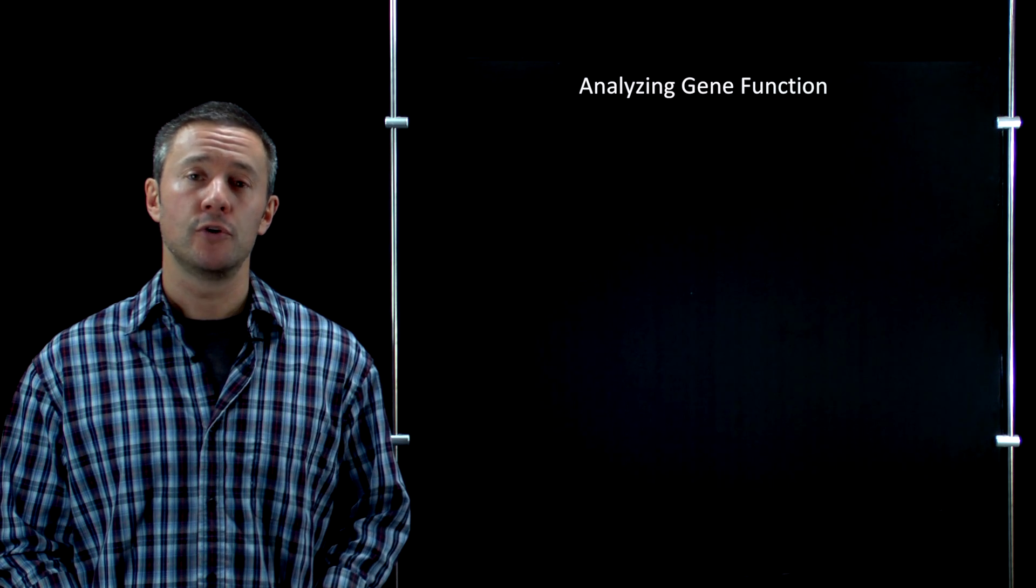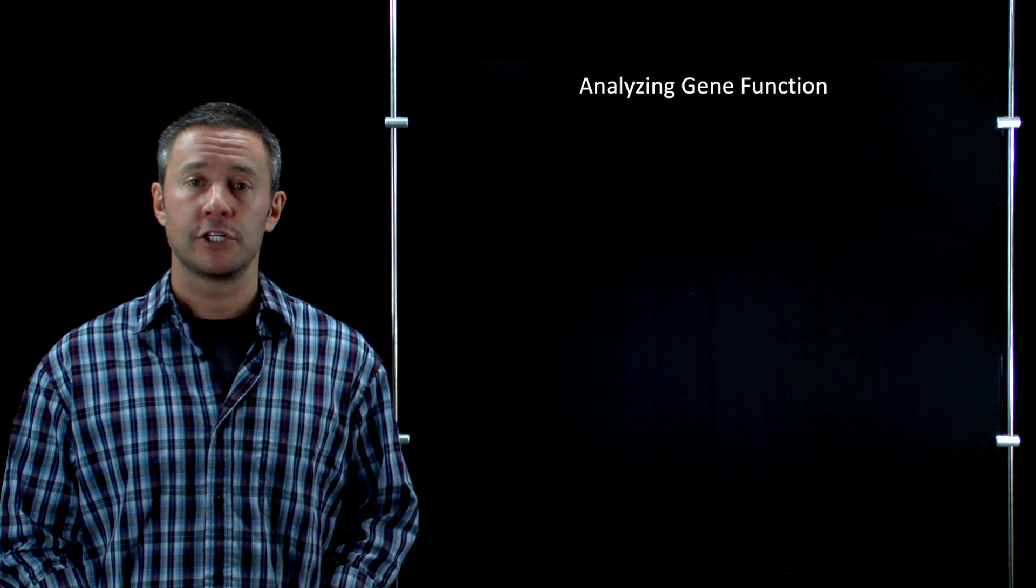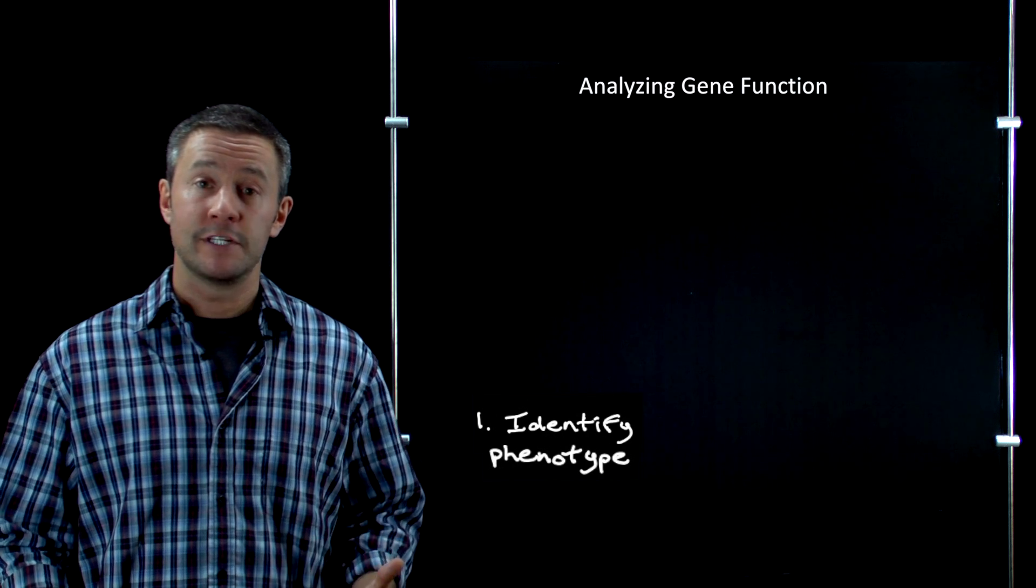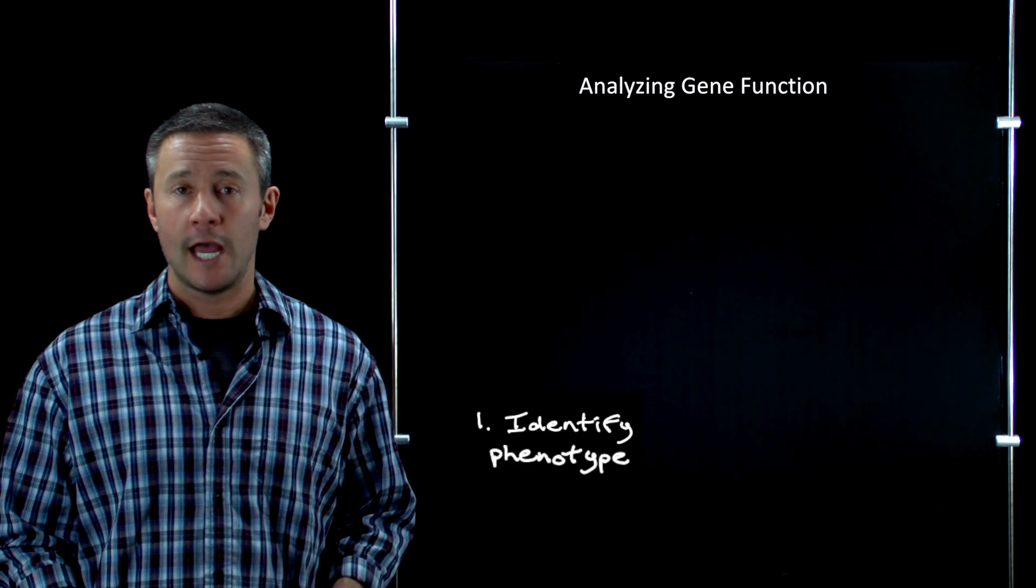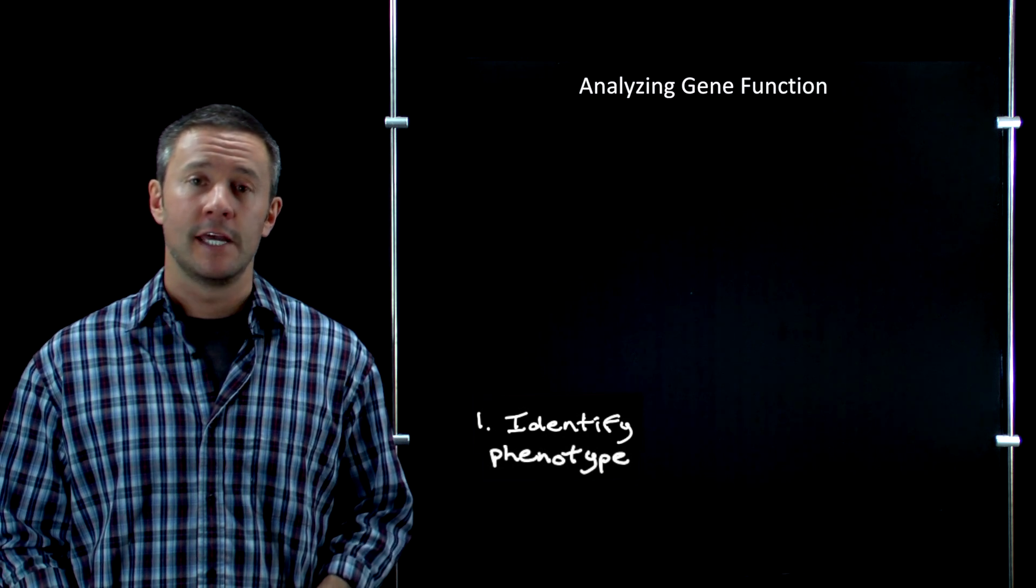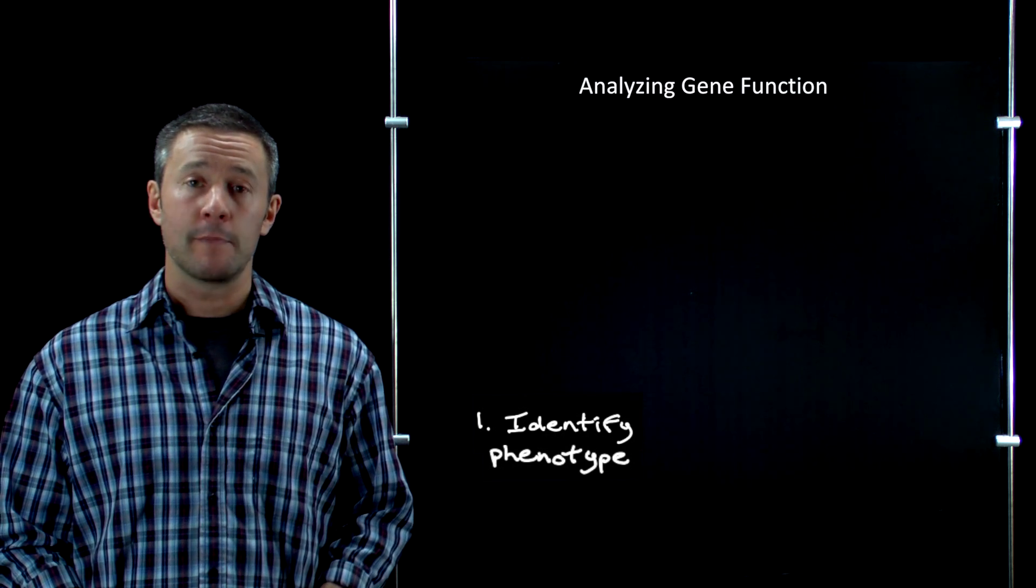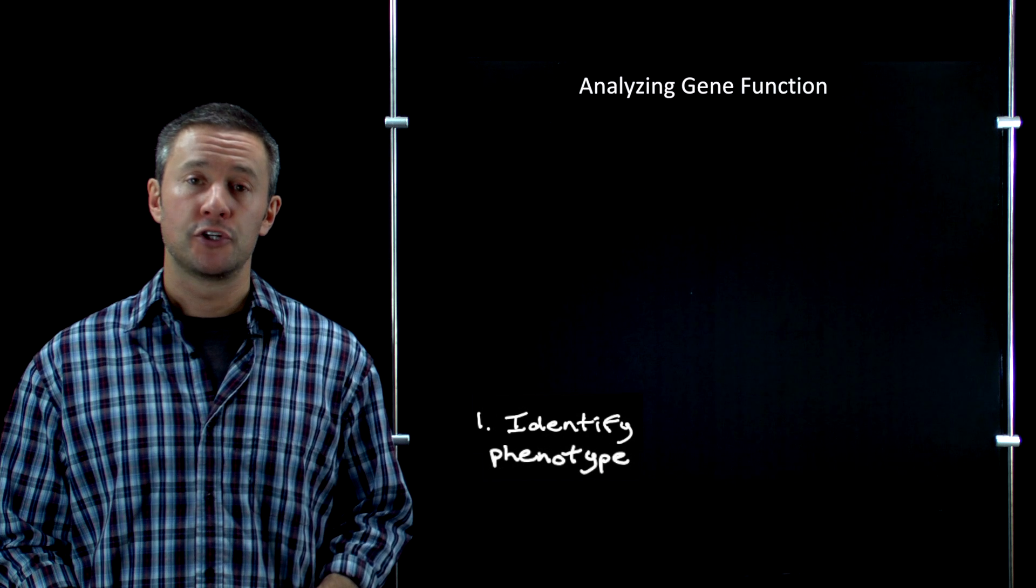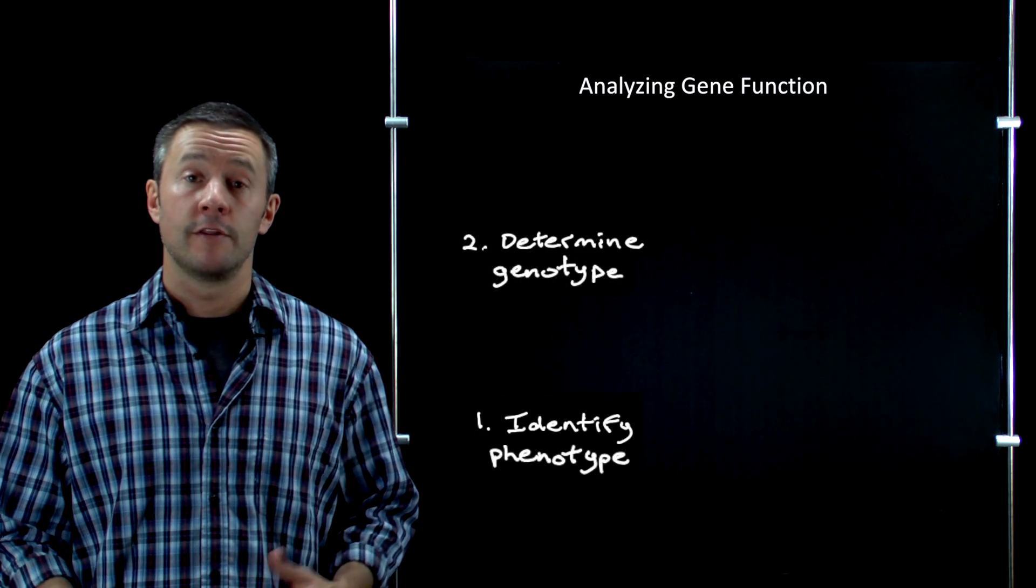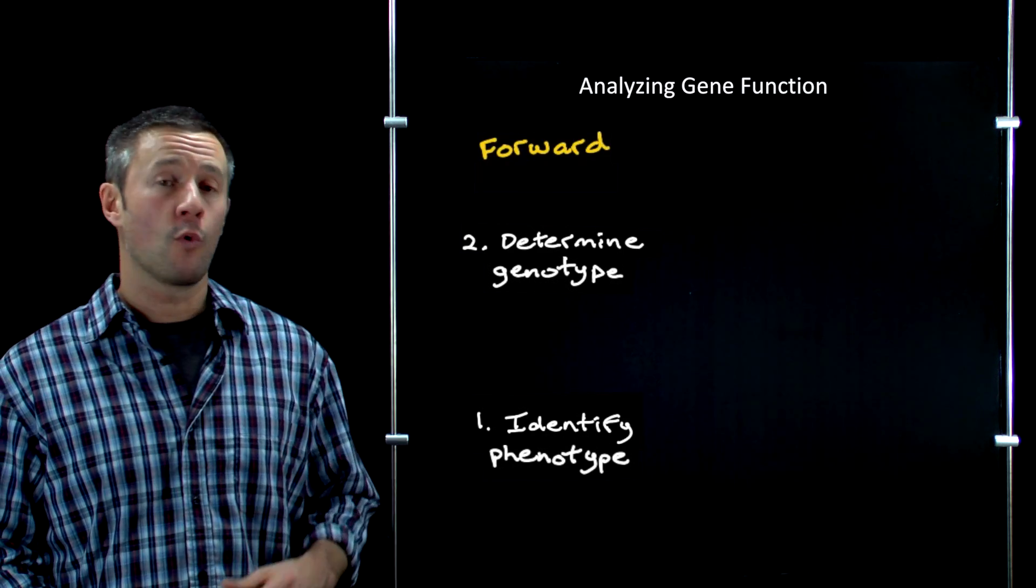Broadly speaking, there are two general approaches that geneticists take to analyze gene function. The first begins with the identification of a phenotype of interest. So that's step one to identify the specific phenotype that you're after. Now, that would typically happen in the context of a genetic screen. So maybe, for example, you've mutagenized a bunch of fruit flies and you're screening for animals that lack wings or something like that. Once you identify that phenotype of interest, then your challenge becomes determining what mutation led to that particular phenotype. So that would be step two, determining the underlying genotype. So this approach is referred to as forward or classical genetics.